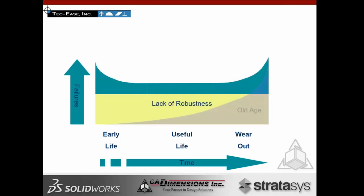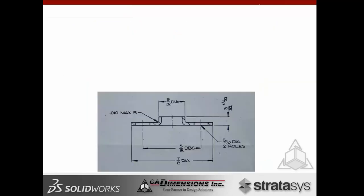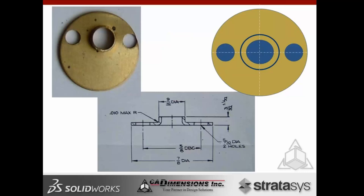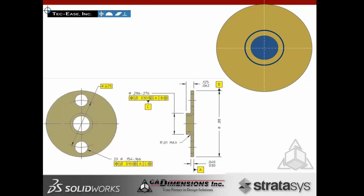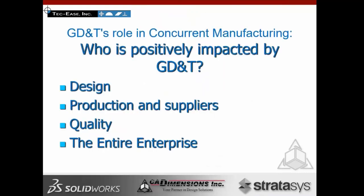Lack of robustness will hurt. A major contributor to early life failures is poor CPKs, which usually results in a loss of market share or reputation. Here's a quick example: I gave this drawing to my manufacturer, even sketched what I wanted — everything perfectly centered. But the end result was off. Without GD&T, this is what you get. Now I've updated the drawing with GD&T — I say what I mean on the drawing, I define design intent, and locate features with respect to design intent. The machinist needs to understand that features will move with respect to how parts go together, not how they're manufactured.